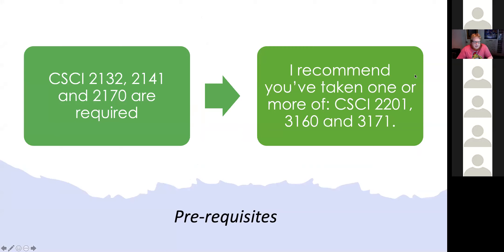To be here, you should have taken Computer Science 2132, 2140, and 2170, or equivalents. If you want to truly take advantage of this course, I've previously TA'd 2201, 3160, and 3171, and each of those courses covers one of the prongs in my three-prong approach. If you've taken those courses, you'll find yourself at a bit of an advantage — but I'll teach you everything I know to get everyone to the same level.